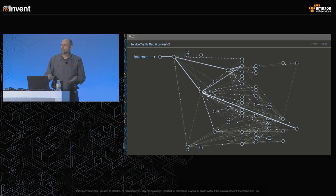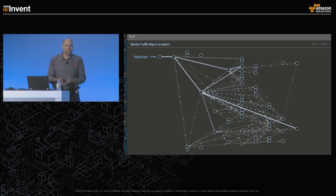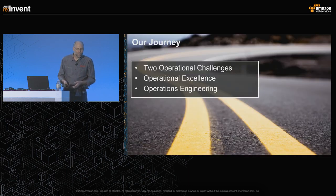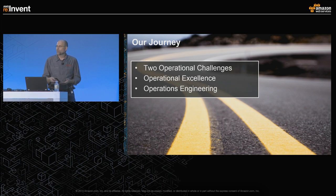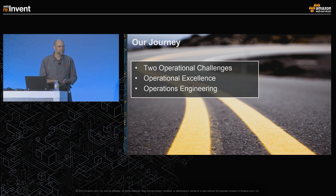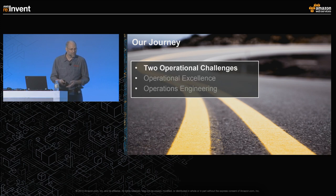So if you're responsible for the health of this kind of ecosystem, it's a pretty daunting task. It's seemingly impossible to maintain health at large scale and still absorb all the change that comes with that. At Netflix, we have a number of strategies to attack this problem space. I'm going to talk about two fundamental operational challenges, how they come together to form our definition of operational excellence, and then how we put engineering muscle behind that.